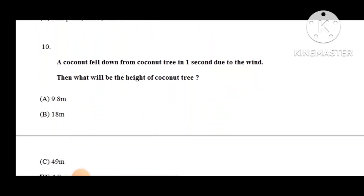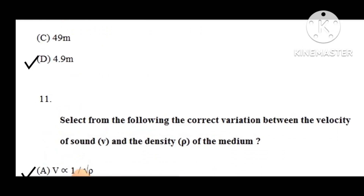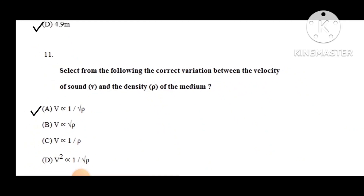Question number 10: A coconut fell down from a coconut tree in one second due to the wind. What will be the height of the coconut tree? Options: A) 9.8 m, B) 1.80 m, C) 49 m, D) 4.9 m. The correct answer is 4.9 meters.